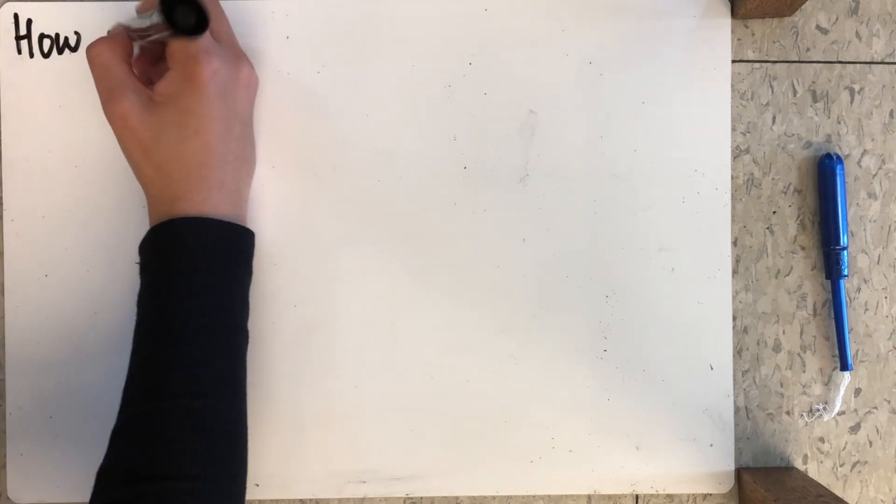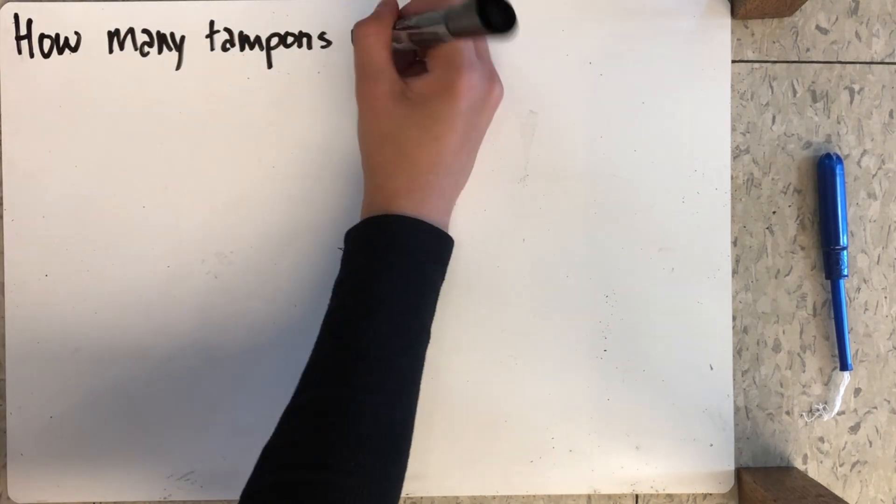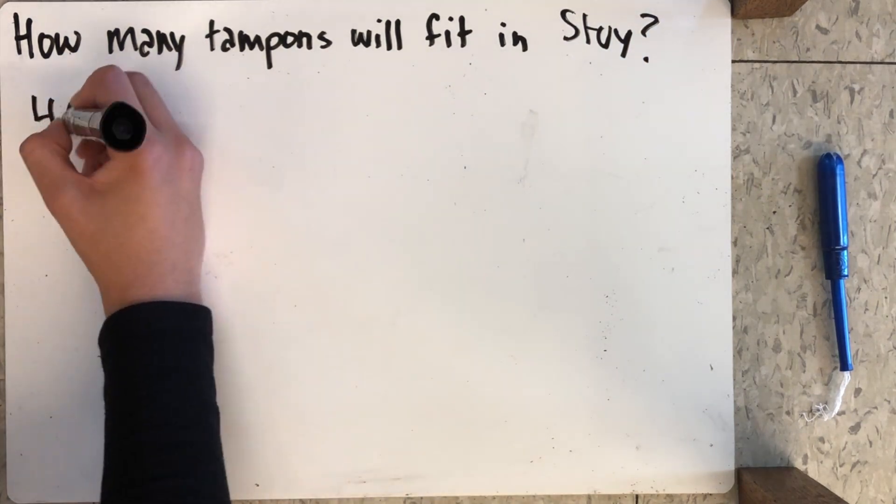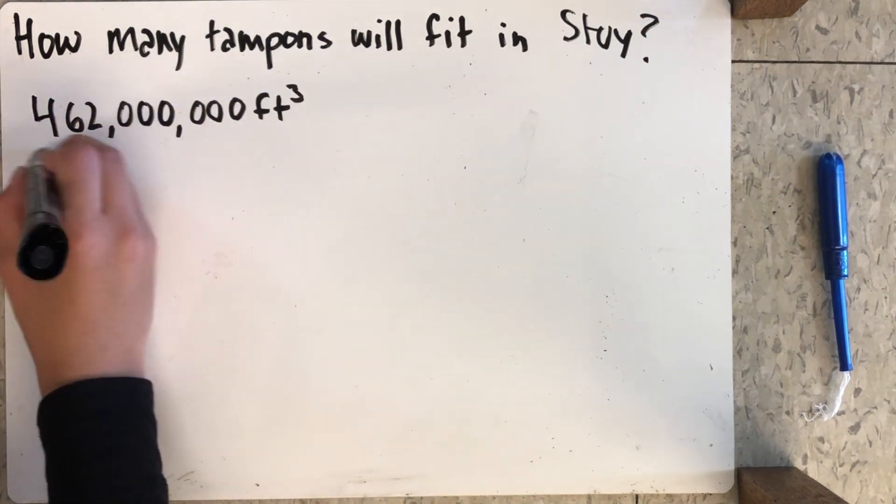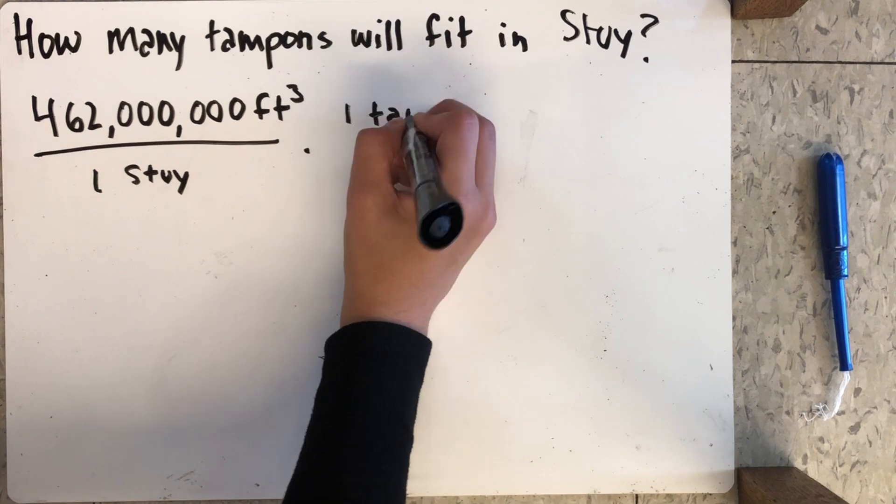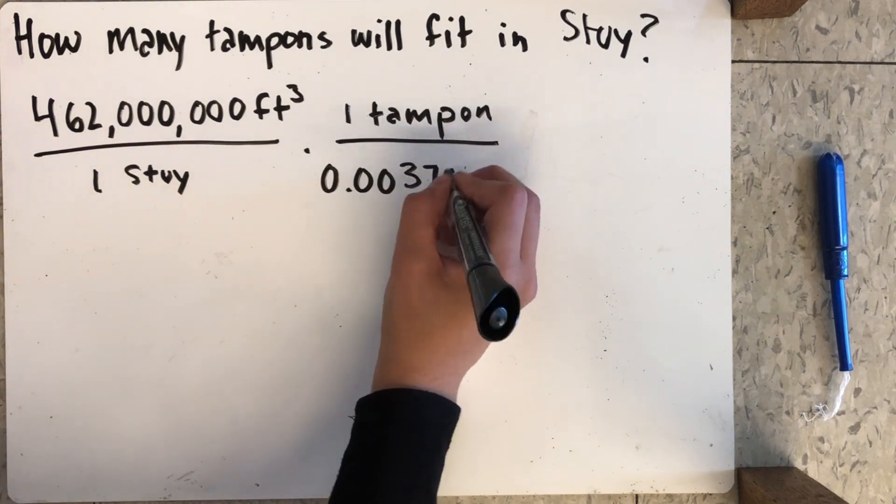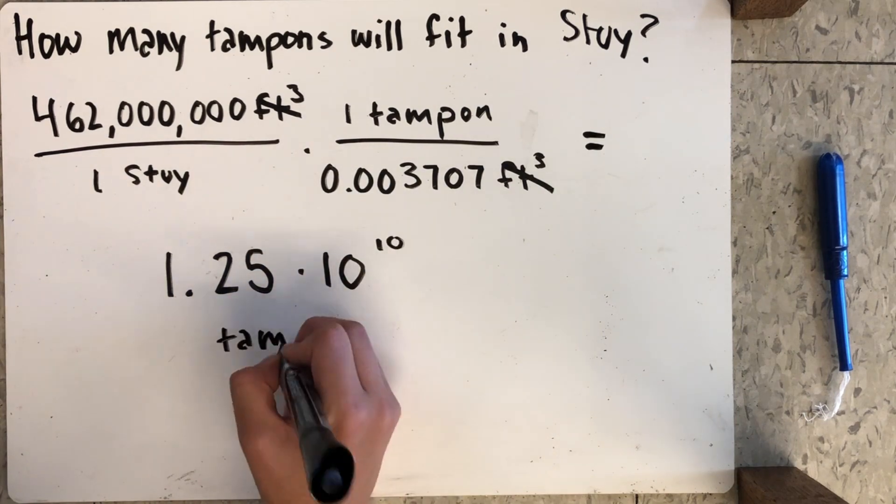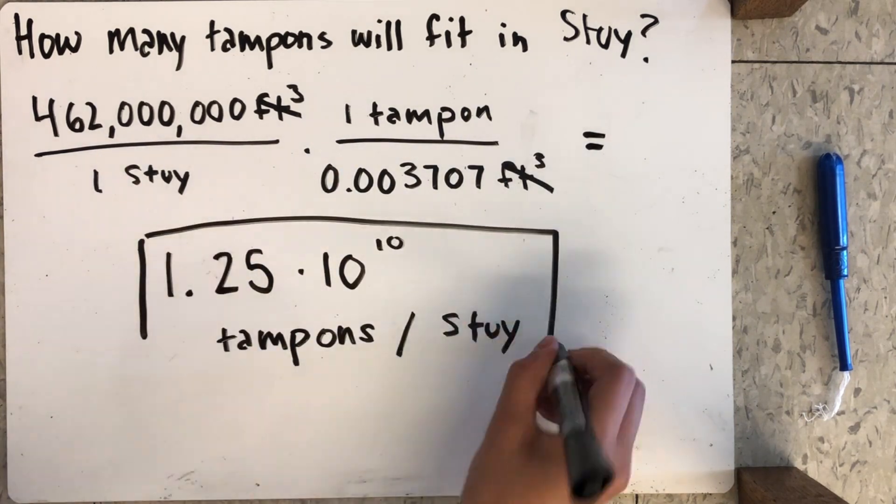To find out just how many tampons would fit in Stuy, we have to use dimensional analysis. To do this, we create a proportion of the volume of Stuy to one Stuy, times the volume of one tampon to one tampon. We multiply this and get 1.25 times 10 to the 10 tampons per Stuy, which is a lot of tampons.